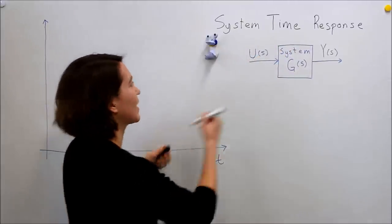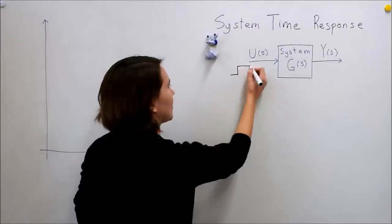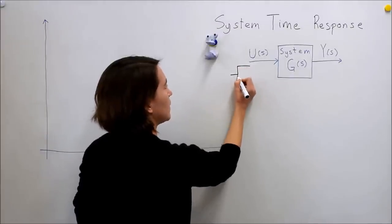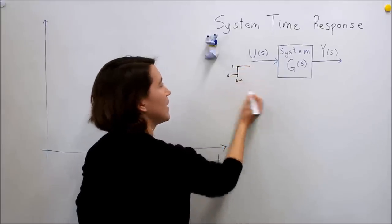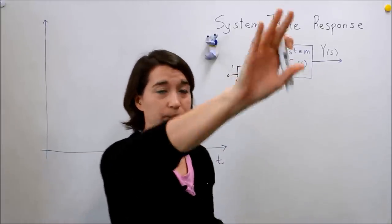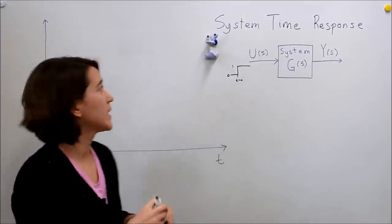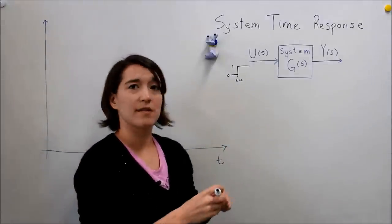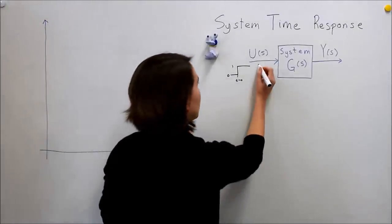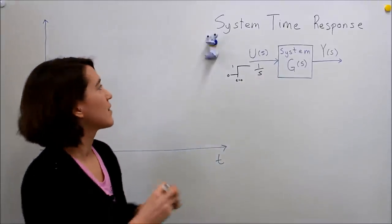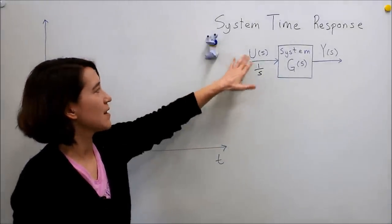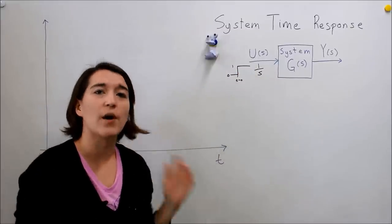If you remember what a unit step looks like, it's pretty much a jump from zero at time equals zero from zero to one, and then it continues to stay at one as time goes forward. If we model this, we get 1 over s as our transfer function for that. So u(s) is 1 over s and we want to see how our system reacts.